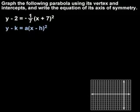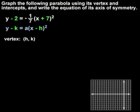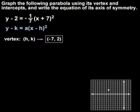Remember that our formula for a parabola is y minus k equals a times parentheses x minus h squared. Notice that h equals negative 7 and k equals 2, which means that the vertex of the parabola, (h, k), is (negative 7, 2). So let's start by plotting this point on the graph.